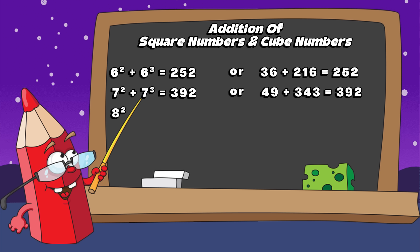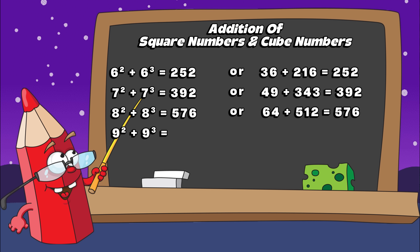Eight square plus eight cube equals five hundred and seventy-six. Or sixty-four plus five hundred and twelve equals five hundred and seventy-six. Nine square plus nine cube equals eight hundred and ten. Or eighty-one plus seven hundred and twenty-nine equals eight hundred and ten.